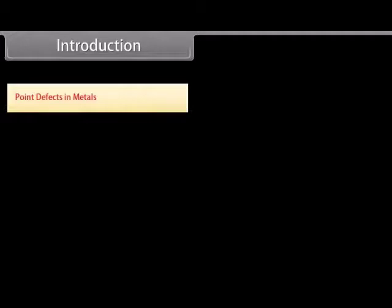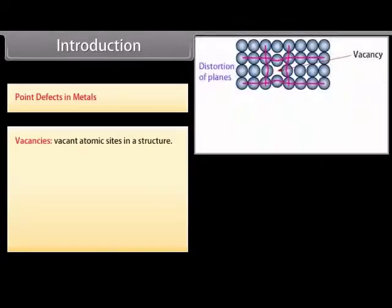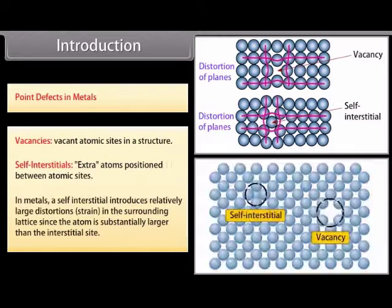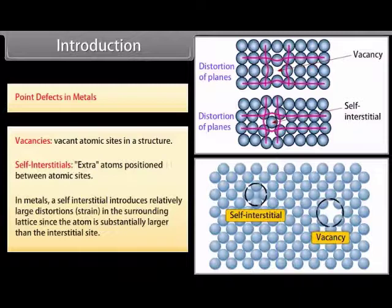Point defects in metals: Vacancies are vacant atomic sites in a structure. Self-interstitials are extra atoms positioned between atomic sites. In metals, a self-interstitial introduces relatively large distortions or strain in the surrounding lattice, since the atom is substantially larger than the interstitial site.